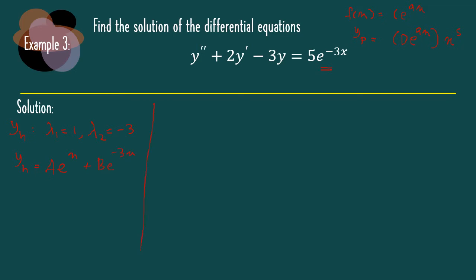Now let's find our yp. Since our f(x) is equal to 5 exponent minus 3x, based on our table, yp is equal to c exponent minus 3x multiplied with x to the power of s. Before we differentiate, let's compare with our yh. We can see we have a same element — exponent minus 3x here equals this term. So s is equal to 1, and yp is equal to cx exponent minus 3x.